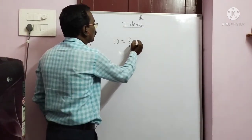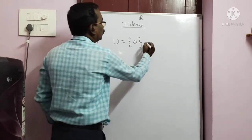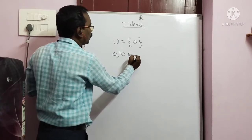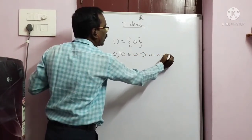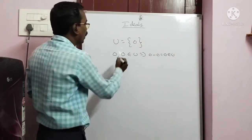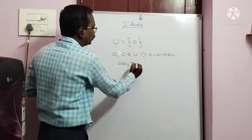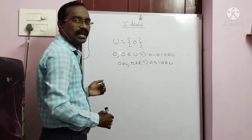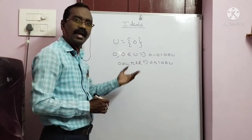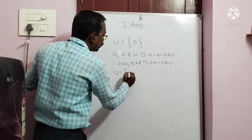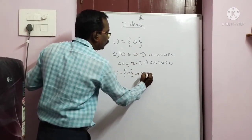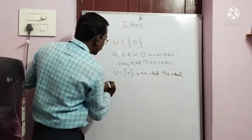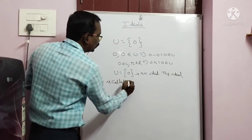U is equal to set {0}. This is the ideal of ring Z. Suppose 0 belongs to U. If 0 minus 0 equals 0 belongs to U, and 0 into r equals 0 belongs to U. So U equals {0} is an ideal. This ideal is called the zero ideal.